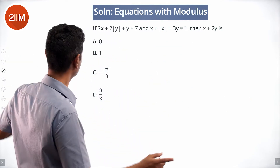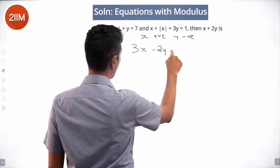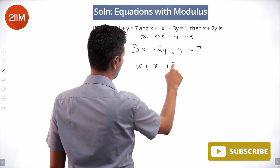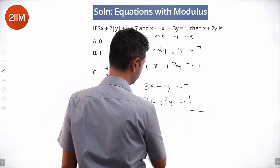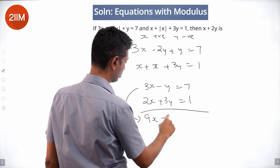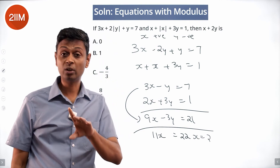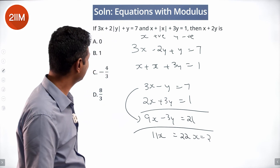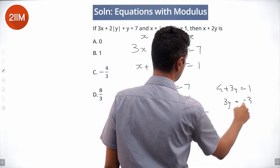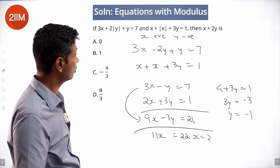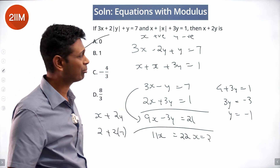So we try x positive and y negative. The equations become 3x - 2y + y = 7, i.e., 3x - y = 7, and x + x + 3y = 1, i.e., 2x + 3y = 1. Wait, correcting: with x positive and y negative, equation 1 gives 3x - 2y + y = 7 → 3x - y = 7, and equation 2 gives x + 3y = 1. Multiply equation 2 by 3: 3x + 9y = 3. Hmm — let me use the working shown: multiply to get 9x - 3y = 21, add to get 11x = 22, so x = 2. Plugging x = 2 into x + 3y = 1: 2 + 3y = 1, so 3y = -3, y = -1. Indeed y is negative — consistent! So (x, y) = (2, -1), and x + 2y = 2 + 2(-1) = 0.